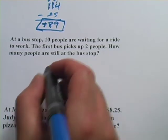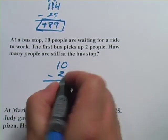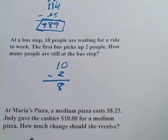Well, you could probably figure this one out in your head pretty quickly. If there are 10 people and a bus takes away two, that leaves eight people.